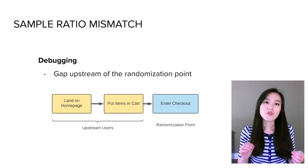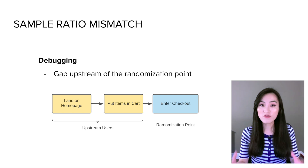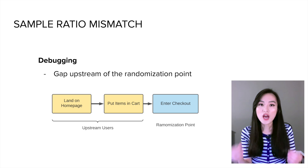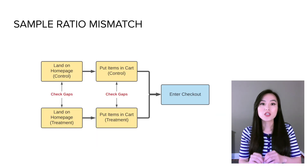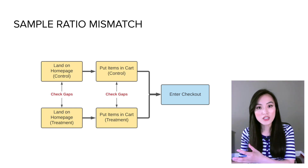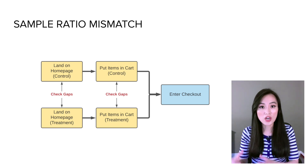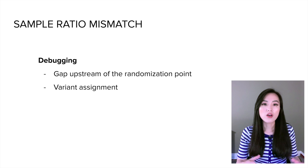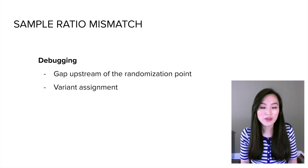For example, if our target users are those who enter checkout, we want to see if there's any difference between control and treatment for users upstream of that step — in other words, before entering checkout. We can check if there's a gap between groups for users who land on the home page, users who put items in a shopping cart, and all steps before users start the checkout process.